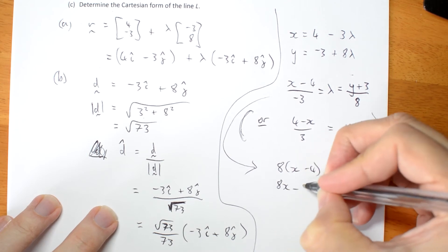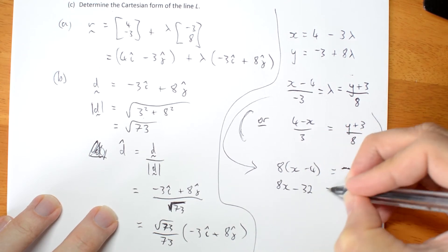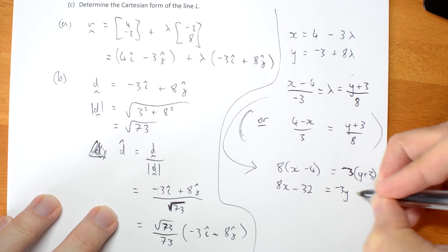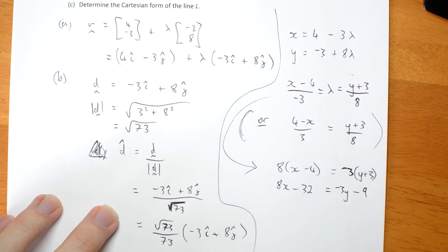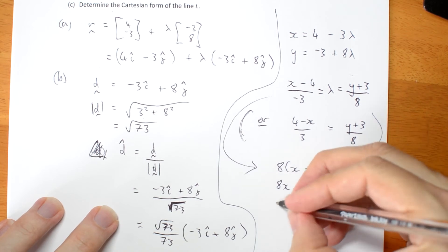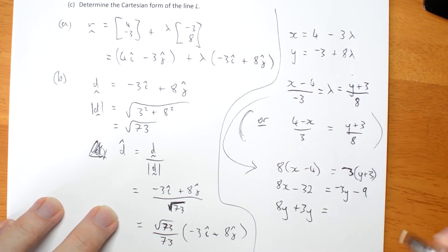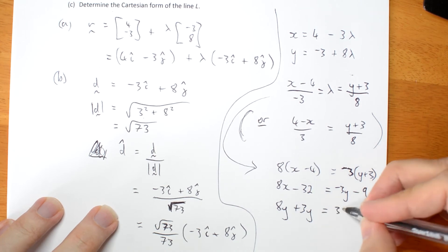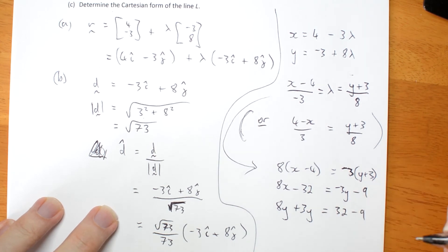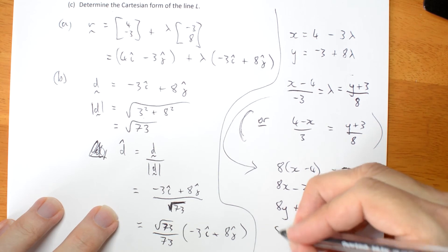8x take 32 is negative 3y take 9. Variables on one side, numbers on the other. 8x plus 3y equals 32 take 9.